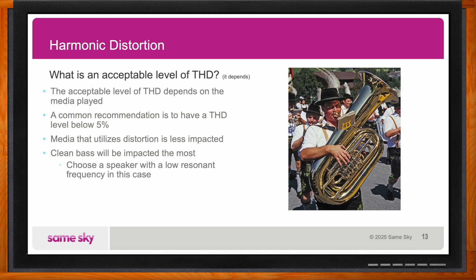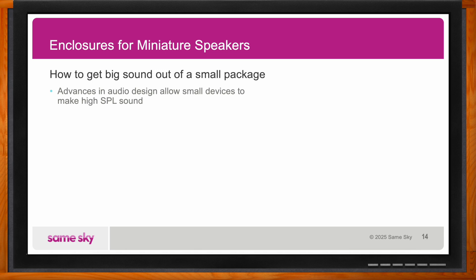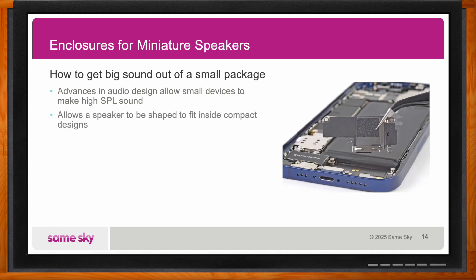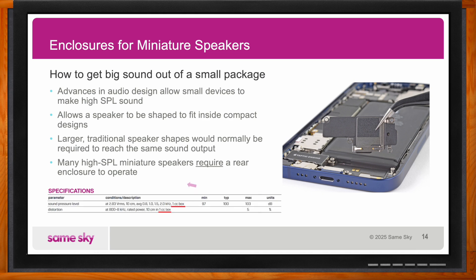If a speaker that can cover the entire perceivable frequency range is needed, a crossover system can be used to mitigate some of the harmonic distortion. There's also a big movement towards smaller and smaller speakers. More recent advances in audio design allow small devices to make high SPL sound. A speaker and rear closure assembly can be shaped to fit inside an application, whereas a more traditional design would require the application to accommodate the speaker's shape. Many high SPL miniature speakers require a rear enclosure to operate — this requirement is often listed in the data sheet.